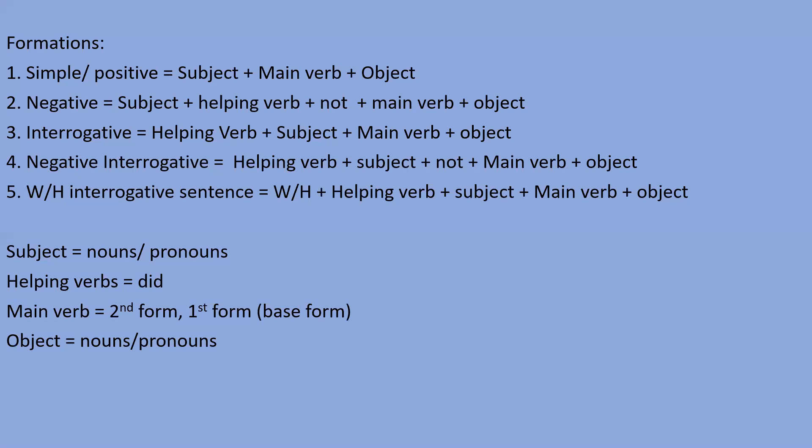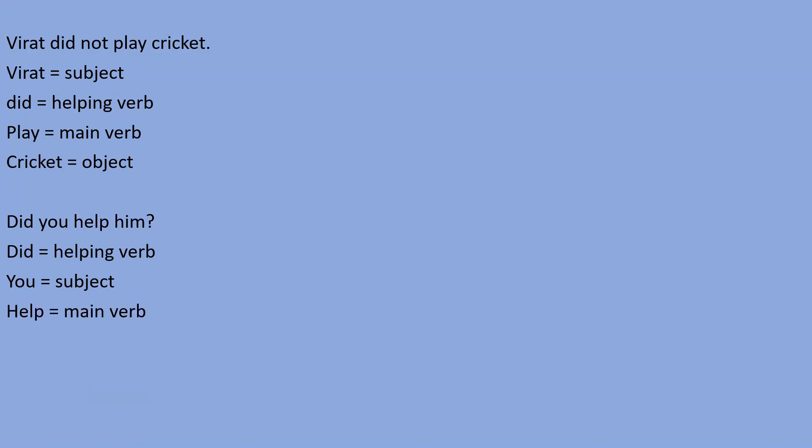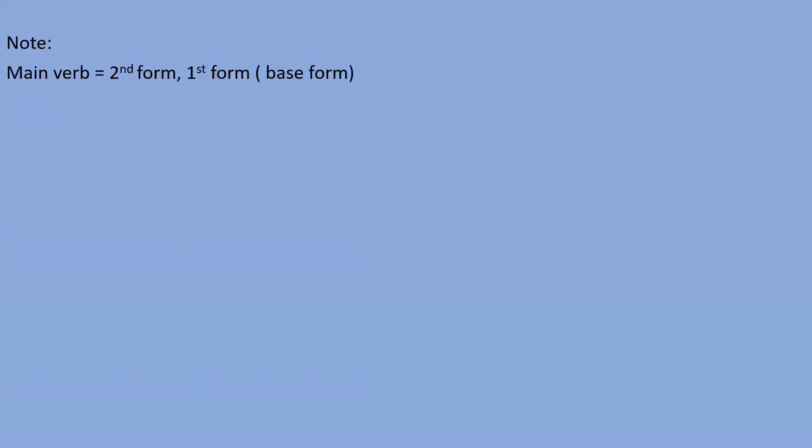For example: 'Virat did not play cricket.' Virat is the subject, 'did' is the helping verb, 'not' is an adverb, 'play' is the main verb in root form, and 'cricket' is the object. Another example: 'Did you help him?' — 'did' is the helping verb, 'you' is the subject, 'help' is the main verb, and 'him' is the object.